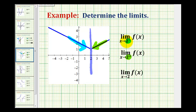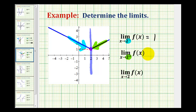As we approach positive 2 from the left or negative side, notice how we're approaching this point here where the y-coordinate is positive 1, therefore we're approaching the function value of positive 1. This left-sided limit is equal to positive 1. And then notice when we approach along the green arrow from the right side, we're approaching that same point, so we're approaching the same function value of y equals 1.